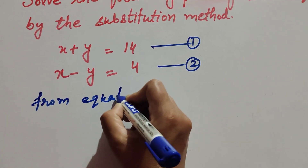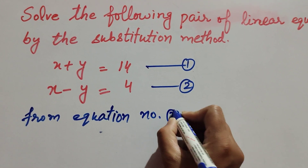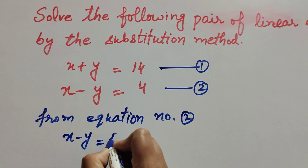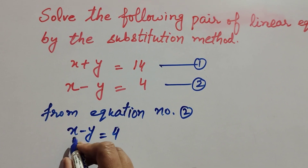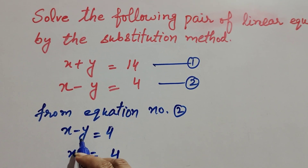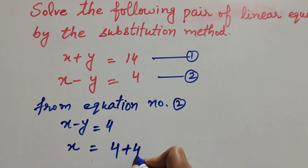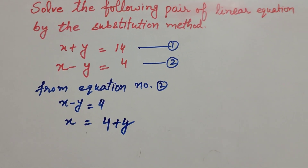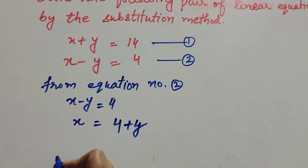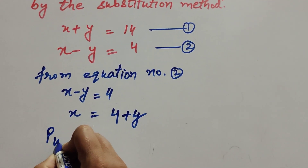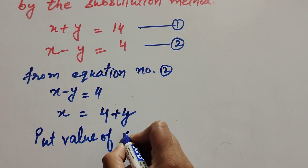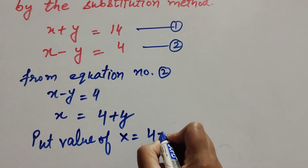From equation 2, x minus y equals 4. We first find the value of x. Transposing minus y to the right-hand side gives plus y, so x is equal to 4 plus y. We put this value into equation 1 and label it equation 3.